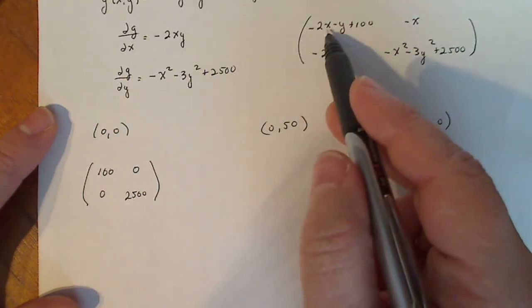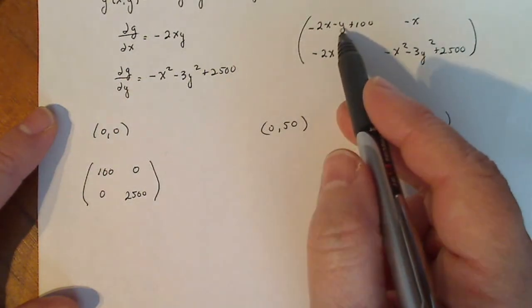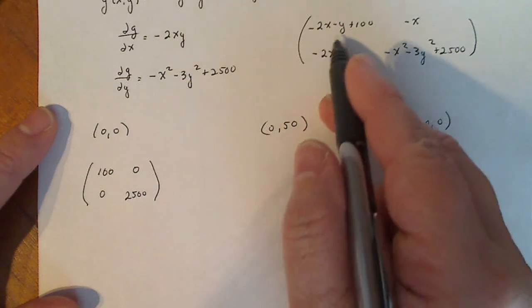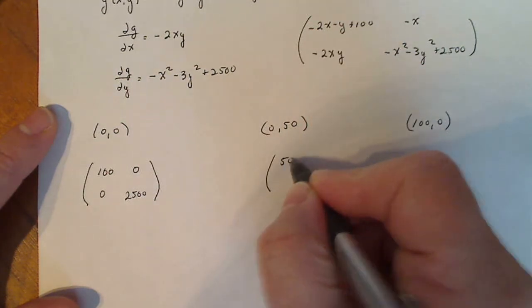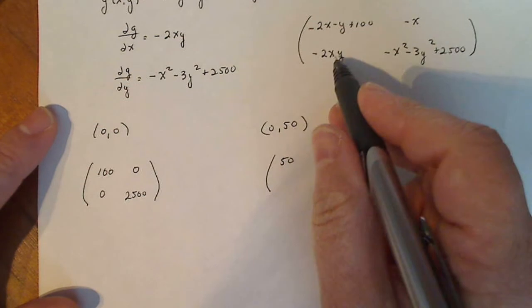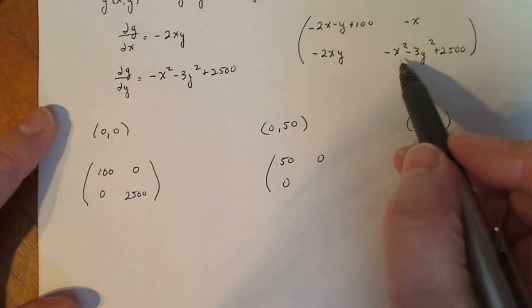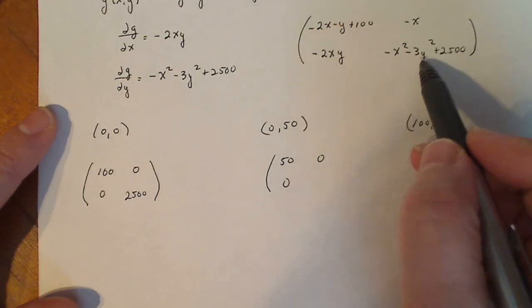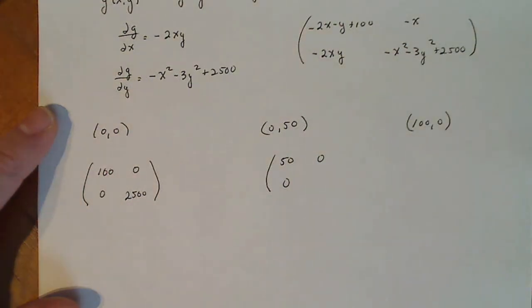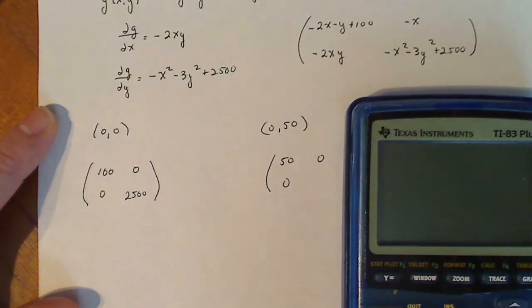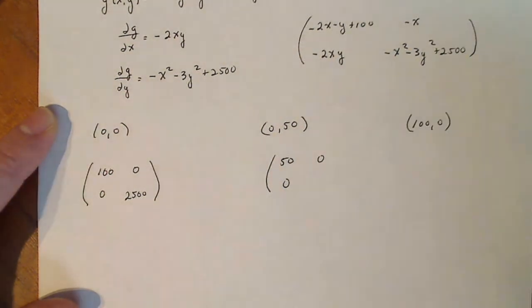For this guy here, I plug in 0 for X and 50 for Y. So here I get 50, I get 0, I get 0, and here it looks like if I plug in 0 for X and 50 for Y, let me get my calculator out. So that's going to be minus 3 times 50 squared plus 2,500, and that's minus 5,000.